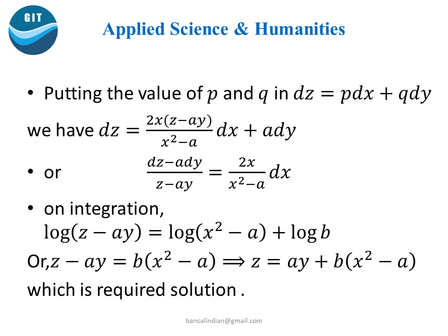Putting the value q = a in the equation and simplifying, we get p = 2x(z − ay) / (x² − a). Since these two values of p and q are independent of each other, putting these values in dz = p dx + q dy, we have dz = [2x(z − ay) / (x² − a)] dx + a dy. Simplifying and rearranging: (dz − a dy) / (z − ay) = 2x / (x² − a) dx. On integrating: log(z − ay) = log(x² − a) + log b. Eliminating log and simplifying, the solution is z = ay + b(x² − a), which is the required solution.